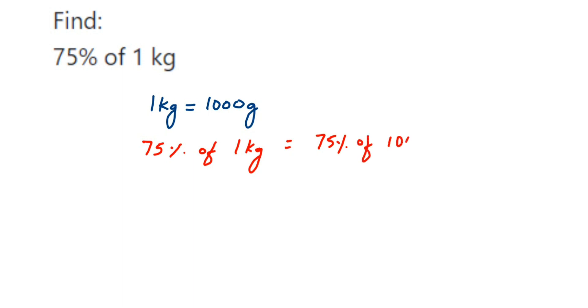Now 75 percent means 75 out of 100, or remove the percentage sign and divide by 100. Of means multiplication and then thousand. Now we can cancel 100 and thousand.